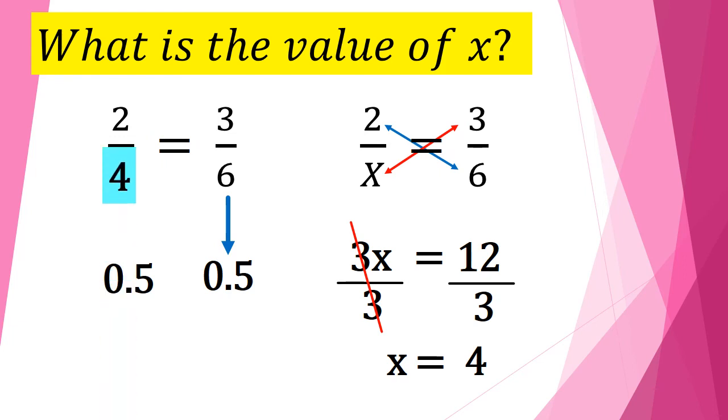So let's check our answer. If x is equal to 4, so 2 over 4. Is 2 over 4 in decimal form equal to 0.5? Yes.